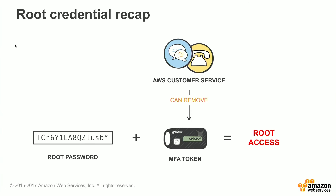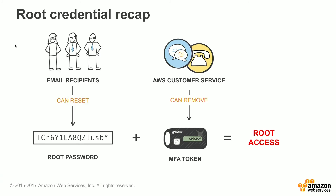Root Credential Recap. When you log into your AWS account, you will use your root password and your MFA token to get root access. If for some reason you lose your MFA token, you can contact AWS customer support to have that reset. The email recipients are used to reset the root's password. You would actually need both AWS support and email recipients to reset both the root password and the MFA token.